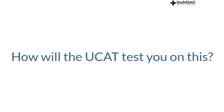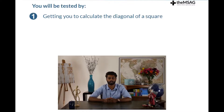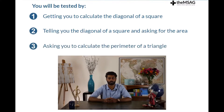But how will the UCAT test you on this? Common ways in which your knowledge of this theorem is tested is by getting you to calculate the diagonal of a square, telling you the diagonal of a square and asking for the area, or asking you to calculate the perimeter of a triangle.